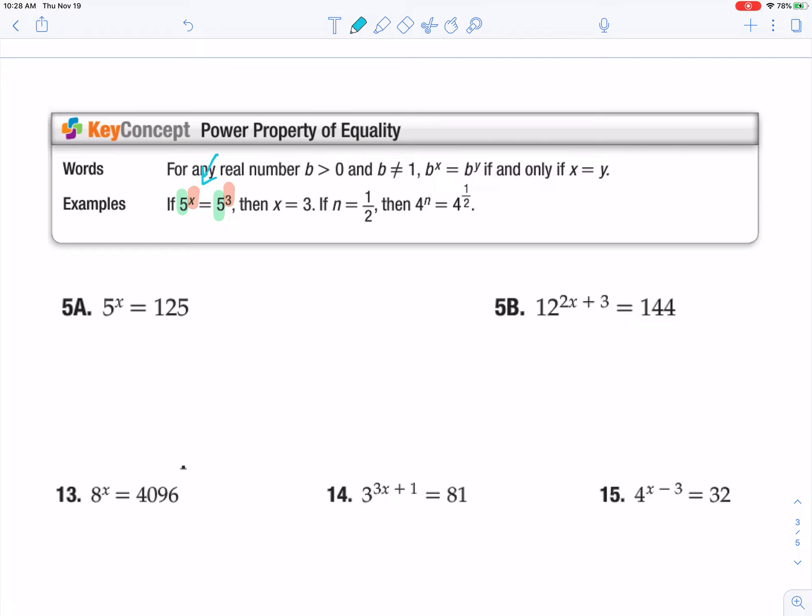So using your Powers Pocket Guide, on 5a, I'm going to highlight the bases. I have 125 and 5. I said that backwards, but that's what I have.